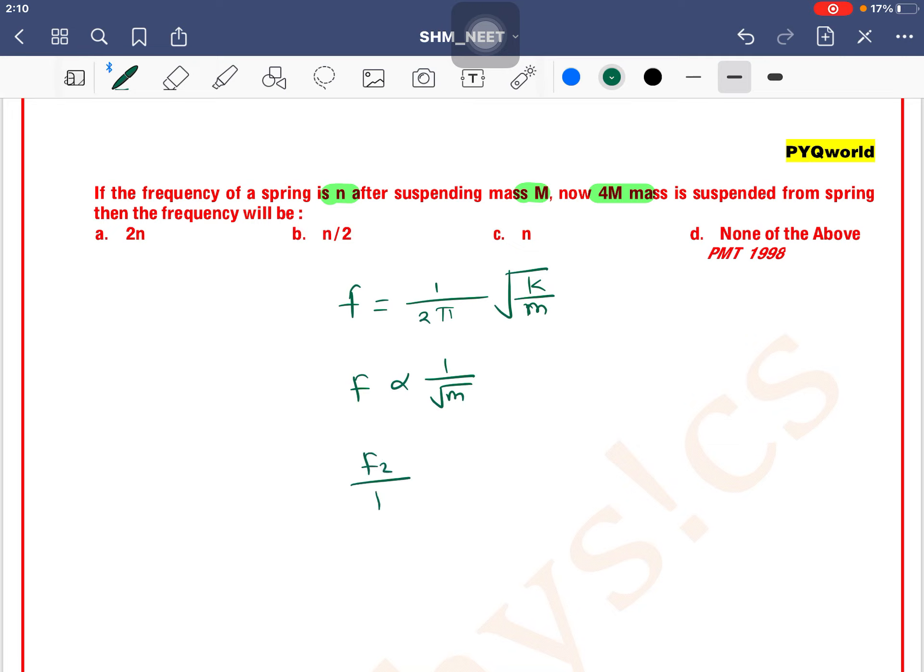write f2 divided by f1 equals square root of m1 by m2. Now it is given that the first mass is m, then the second is 4m, so f2 divided by n equals square root of m